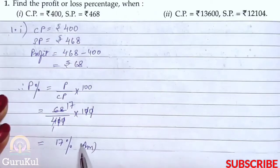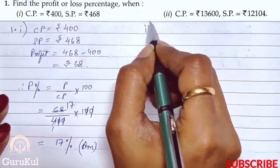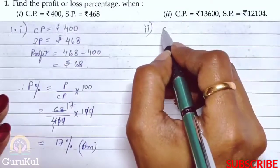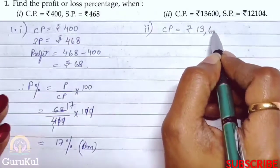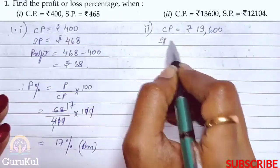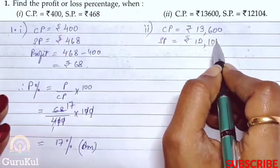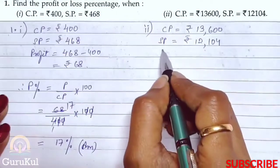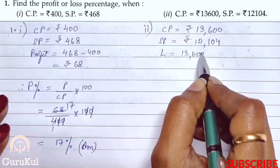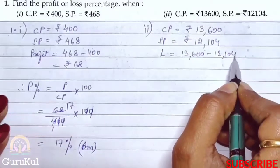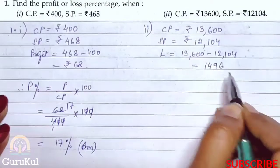Now we will come to Part 2 of question number 1, which says that CP is equal to Rs. 13,600 and SP is equal to Rs. 12,104. Since CP is greater than SP, a loss has occurred. So loss is equal to Rs. 13,600 minus Rs. 12,104, which gives us Rs. 1,496.